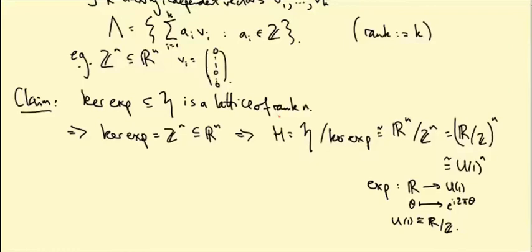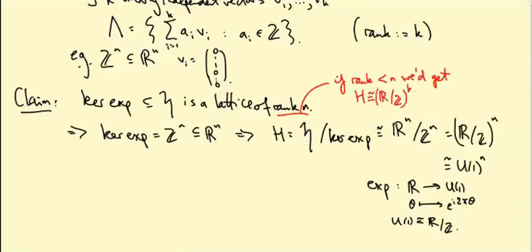The rank-n part is not too hard once you know ker(exp) is a lattice. If the rank were less than n, say k, we'd get H isomorphic to (R/Z)^k × R^{n−k}, and in that case H is not compact because the factors R^{n−k} prevent compactness. So the rank must actually equal n.